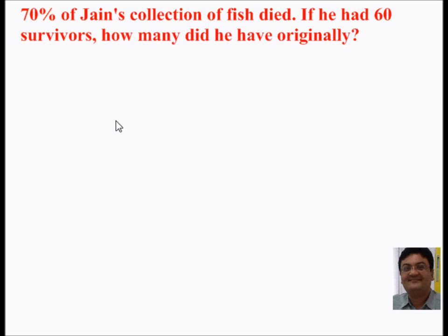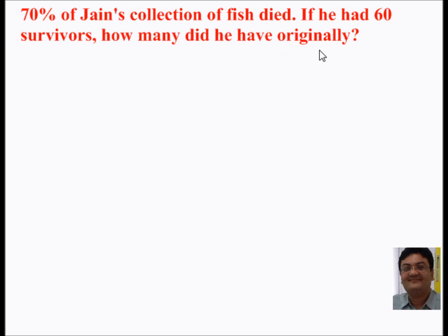In this session we are going to solve a simple problem based on percentage. 70% of Jane's collection of fish died. If he had 60 survivors, how many did he have originally?